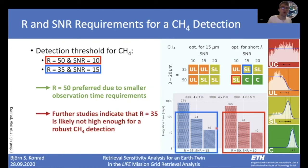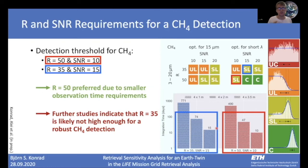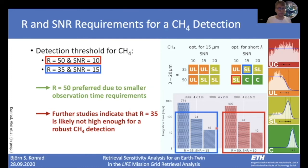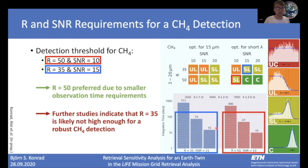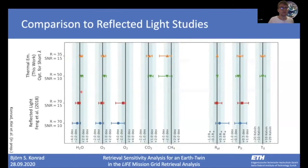Furthermore, more advanced studies — which we will publish — showed that R=35 is unlikely to be high enough for a robust CH4 detection, which again underlines that we need a spectral resolution of at least 50.